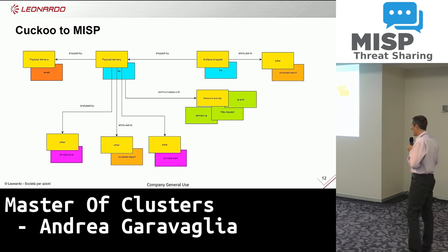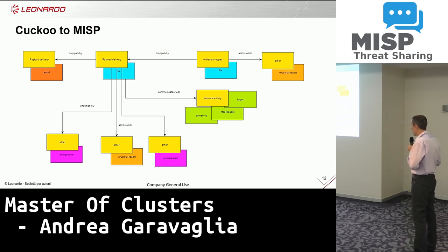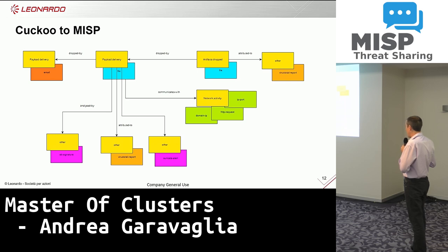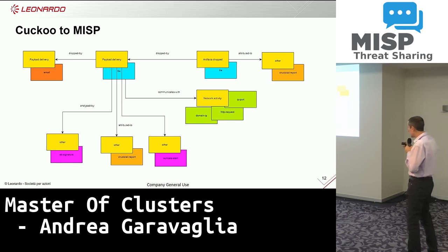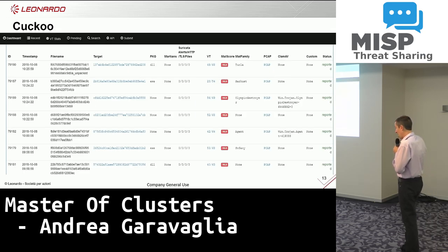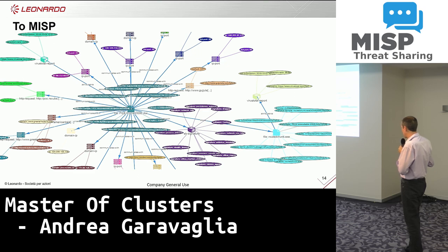This is a schema of the Cuckoo sandbox writing into MISP. I like objects, so I started adding the file object into MISP. If a file is downloading another file, I create another object. If this file has a positive value on VirusTotal, I create that object. If the first file is communicating with some website, I create that object. If the file has sandbox signatures, I write that object, and so on — or if it's matching some Suricata rule. This is the Cuckoo sandbox output becoming objects inside MISP.